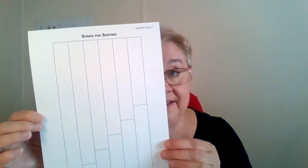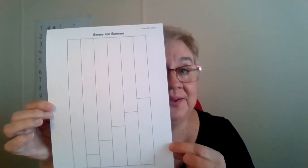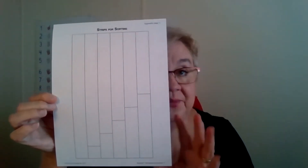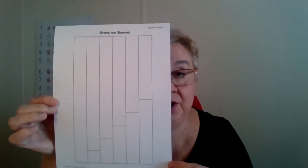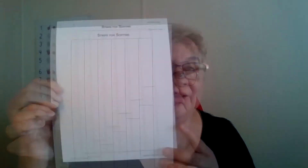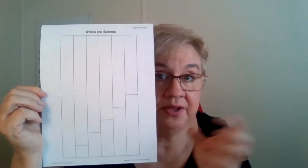There are a couple items not on the PowerPoint that you'll need for this lesson. One is appendix page three — the strips for sorting. These need to be cut out if they're not already. You'll be using these in other lessons too, so if they get damaged or lost, there's another appendix page three in the back of your teacher's manual. I'd use a paperclip to keep them all together in one place.